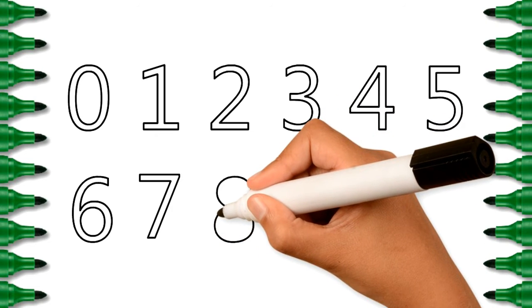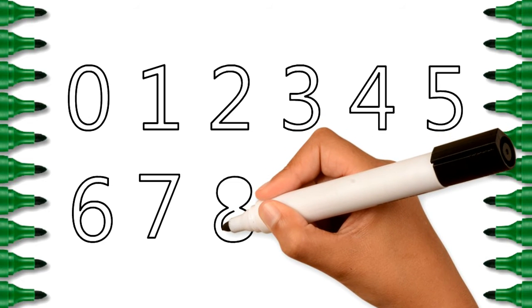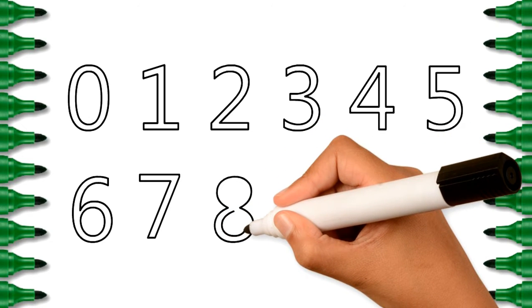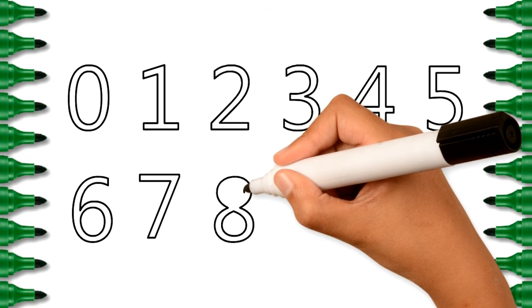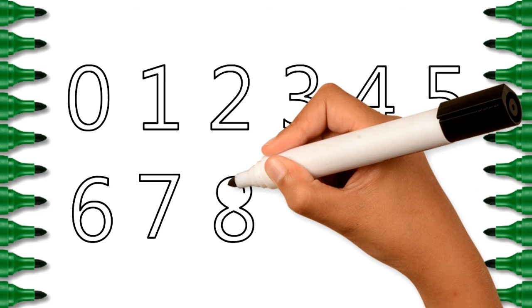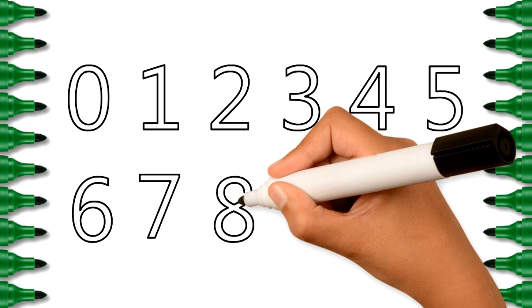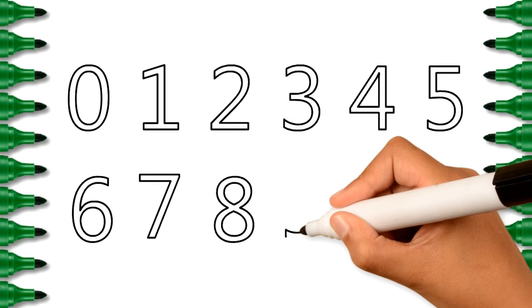One, two, three, splashing in the sea. Four, five, six, naughty little chicks. Seven and nine, swinging on the pine. Here comes number ten and angry mother hen.